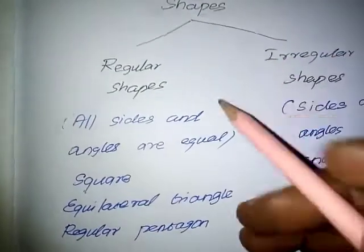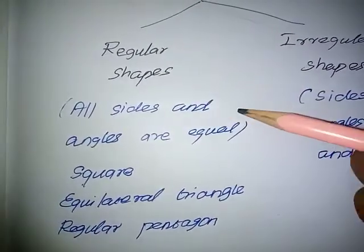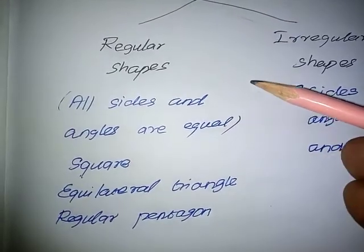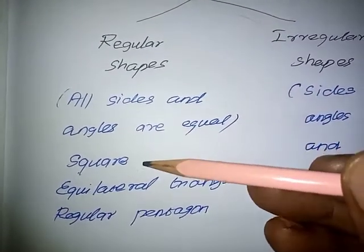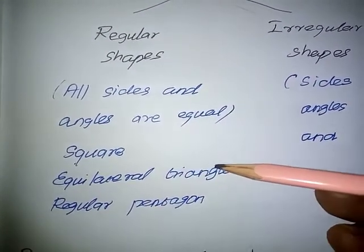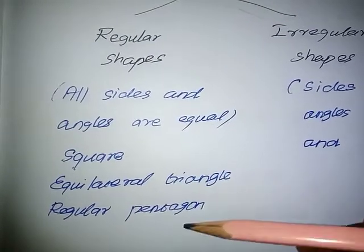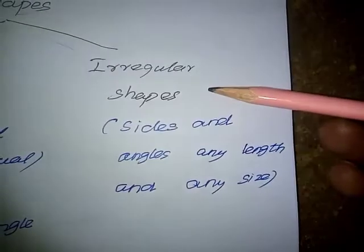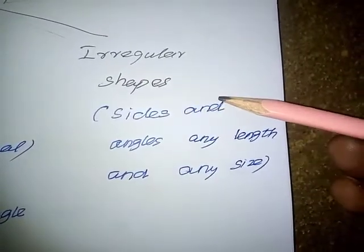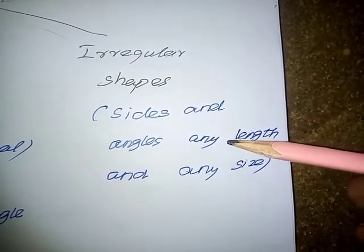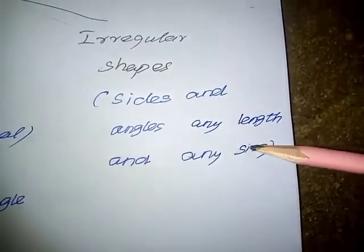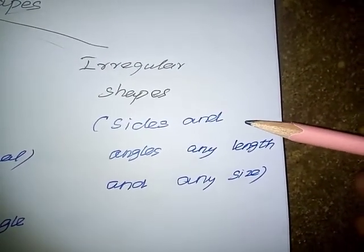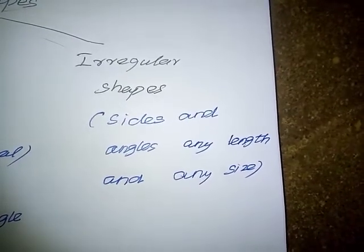Regular shapes are those where all sides and angles are equal. Examples: Square, Equilateral Triangle, Regular Pentagon, and so on. Irregular shapes have sides and angles of any length and any size. Examples: Rectangle, Parallelogram, and so on.